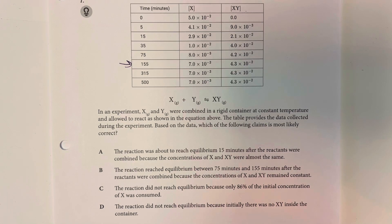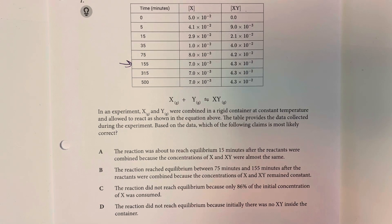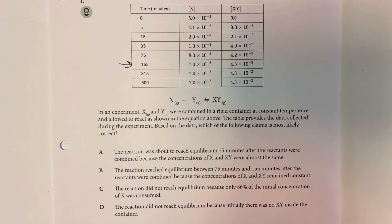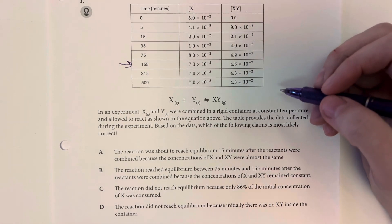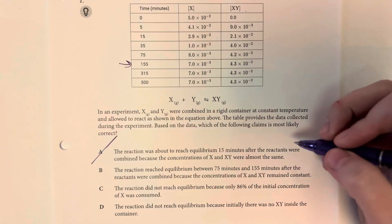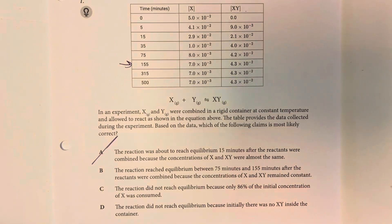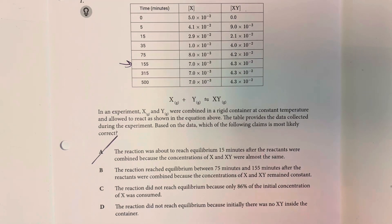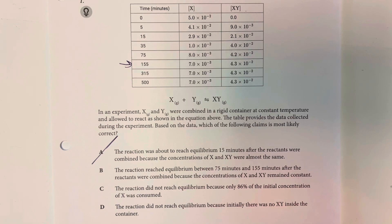Option A says the reaction was about to reach equilibrium at 15 minutes after the reactants were combined because the concentrations of X and XY were almost the same. That is not correct — it's not the actual concentrations that need to be equal. It's the rate forward and the rate backward that need to be equal, holding concentrations constant over time, not in relation to each other.